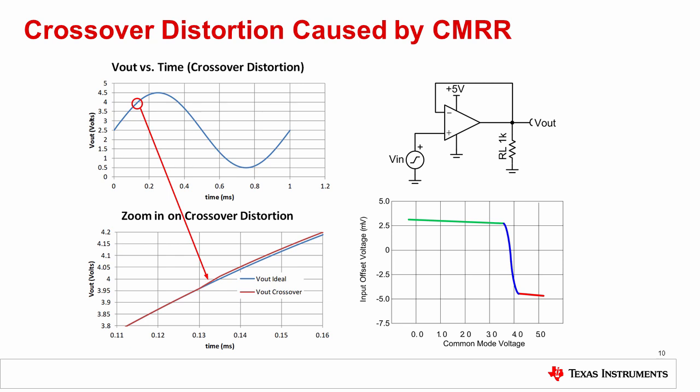Rail-to-rail amplifiers use two different internal input stages to achieve input voltage range from the negative supply to the positive supply. The problem with most rail-to-rail amplifiers is that they will have a jump in the input offset voltage when the common mode voltage reaches the point where we transition between the two input stages. This generates a type of distortion called input crossover distortion. Since common mode rejection is determined by looking at the change in offset voltage over common mode voltage, this jump in offset will also affect CMRR.